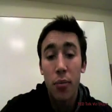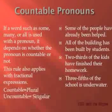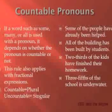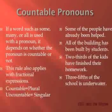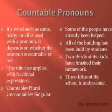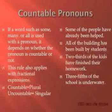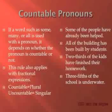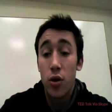The next part would be countable pronouns. These words include words such as 'some,' 'many,' 'all.' These can all be used as a pronoun at times, but it depends on whether the pronoun is countable or not. If the word is countable, then it would be plural. If the word is uncountable, it is singular. For example, 'some of the people have already been helped' — these people can be counted, so when you use the word 'some of the people,' there has to be a plural item, so you would use 'have.'